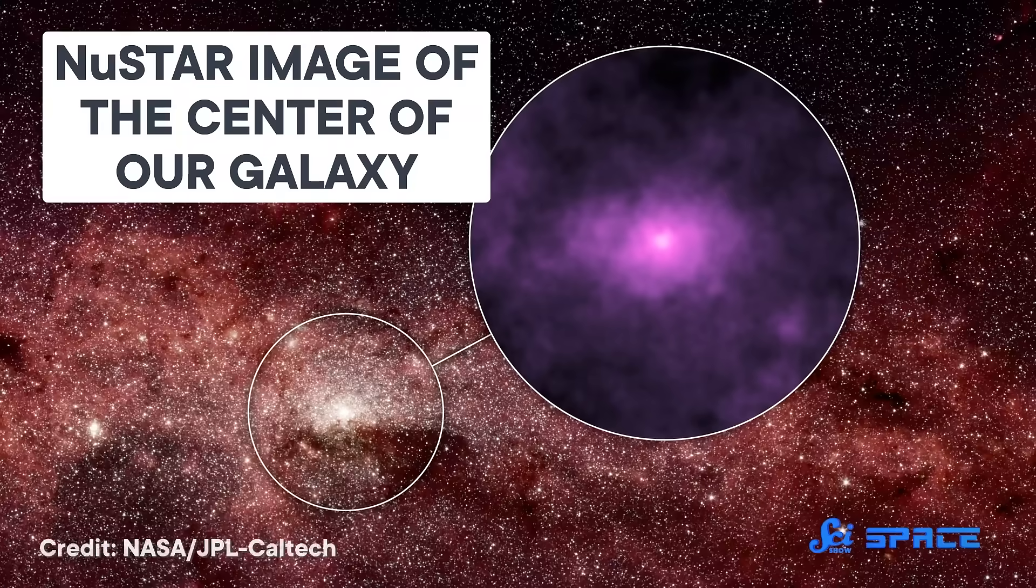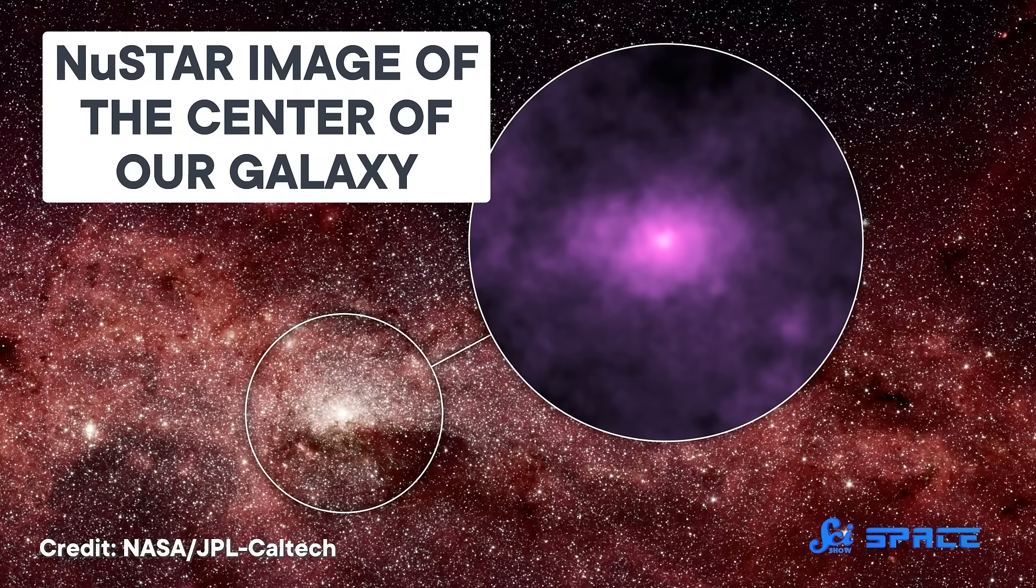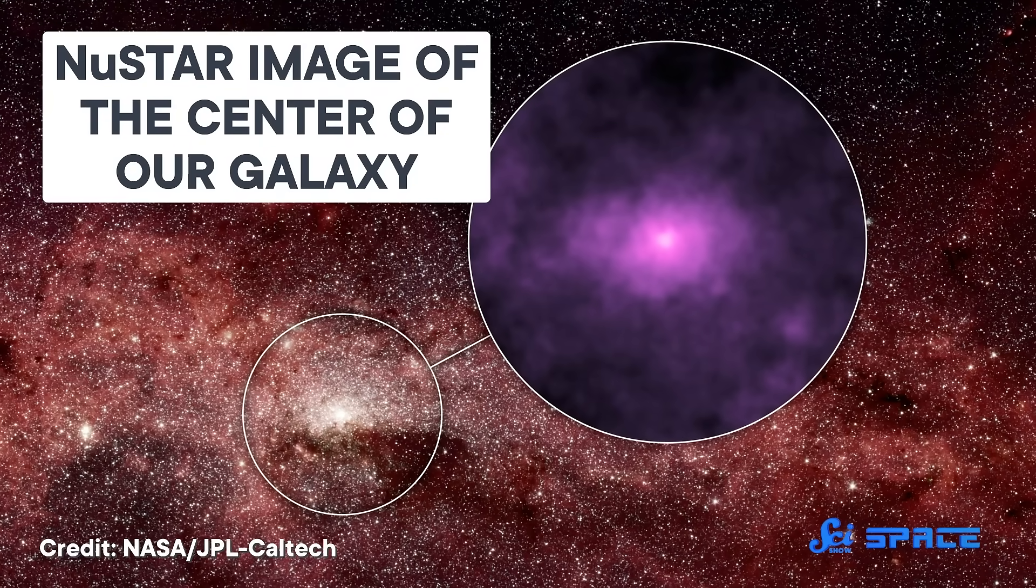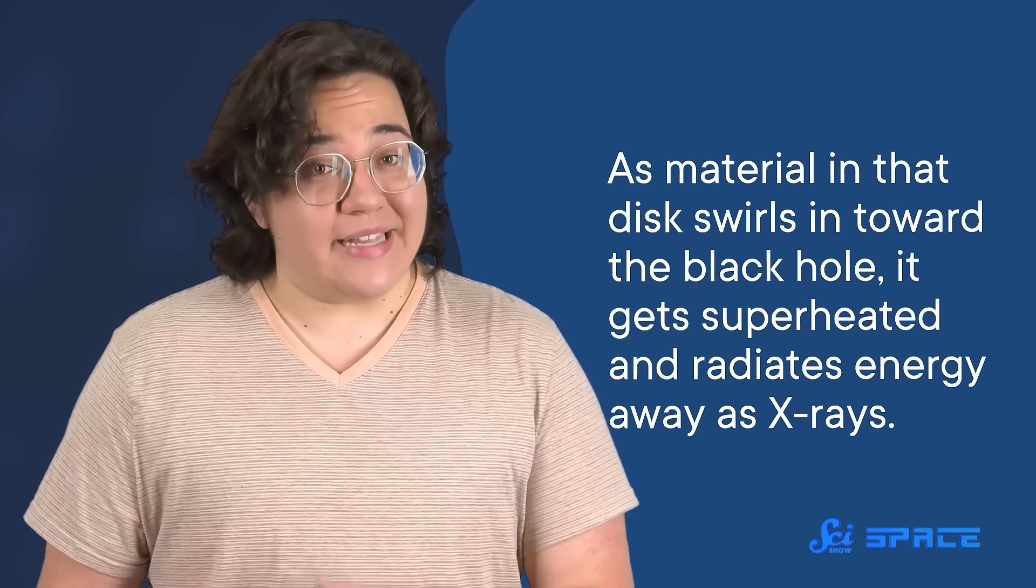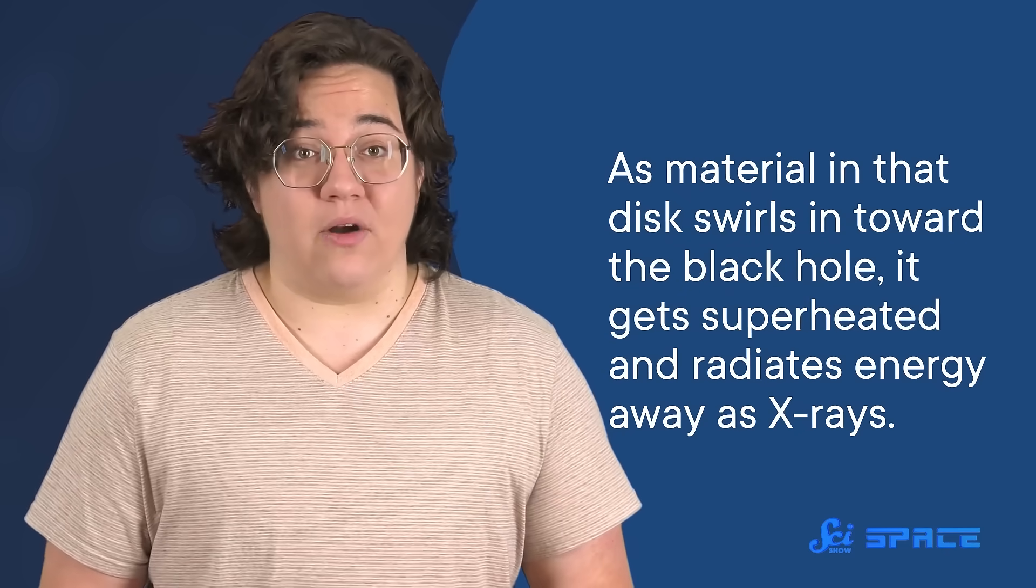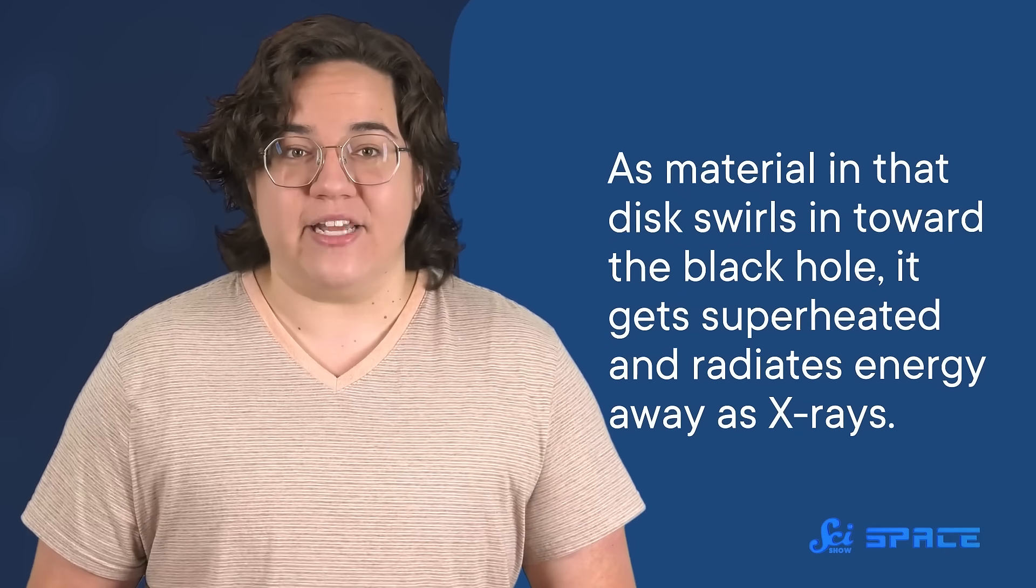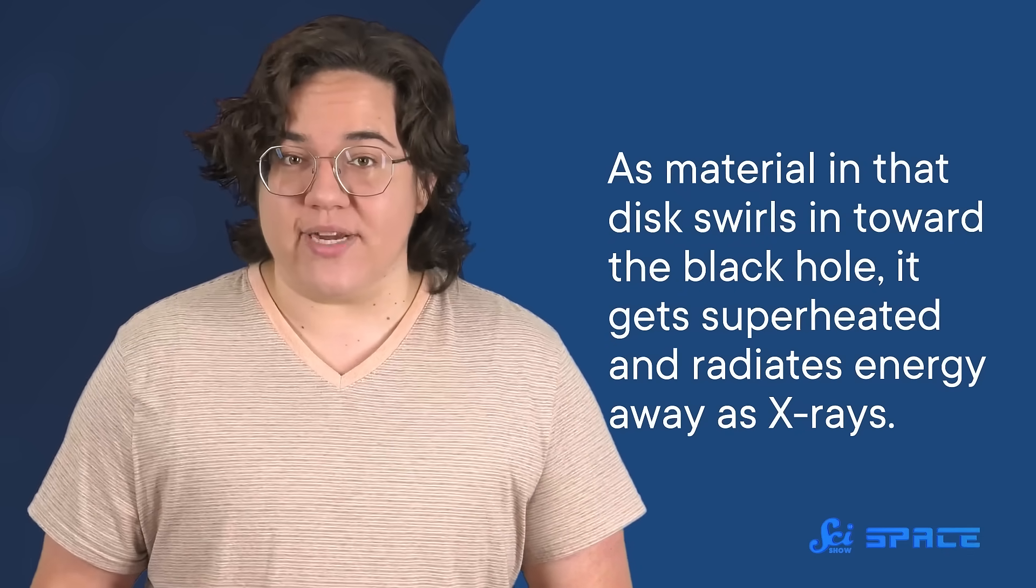Now, it's not like NUSTAR could see the black holes themselves, because as long as an object is invisible, it doesn't matter how powerful your telescope is. But while black holes themselves are invisible, they're often surrounded by a huge, turbulent disk of material. As material in that disk swirls in toward the black hole, it gets superheated and radiates energy away as X-rays. So it glows in wavelengths that NUSTAR can detect.